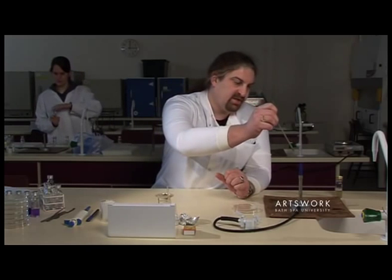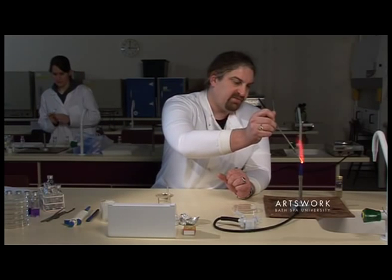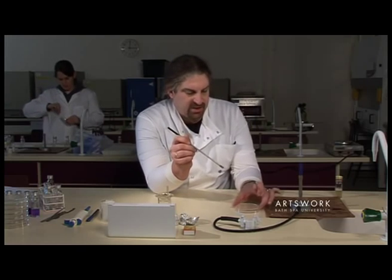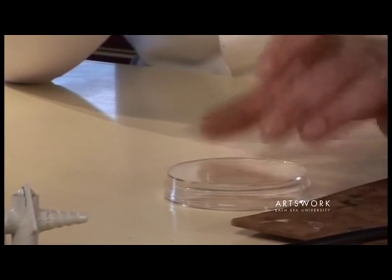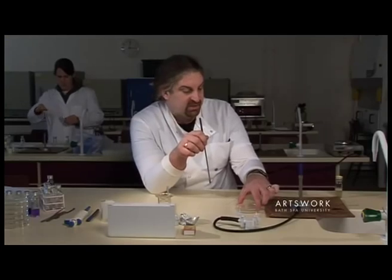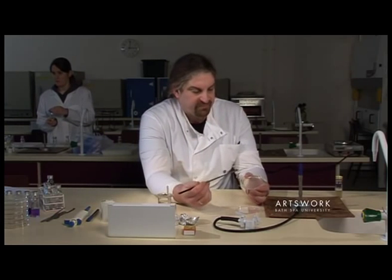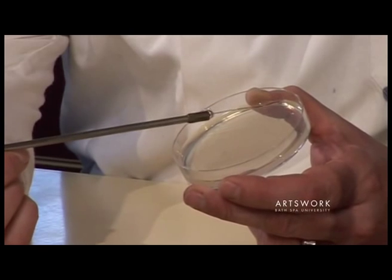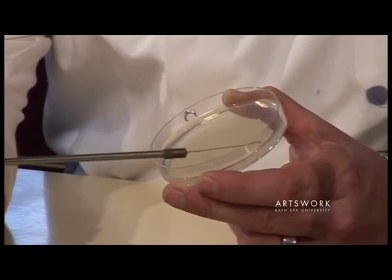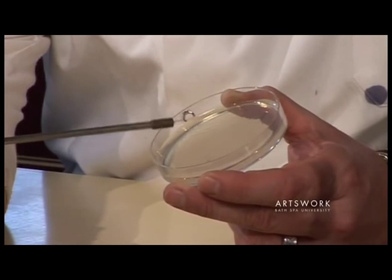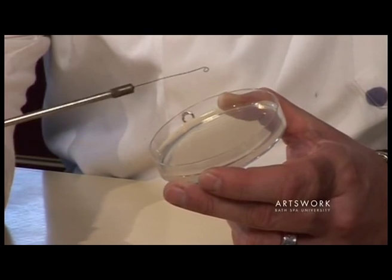Again, flame the loop and turn the agar plate. You can't see the culture, but you'll be able to see the impressions that your loop makes. From the end of your last streaks, make four or five streaks out, down, and across the plate.